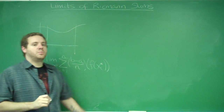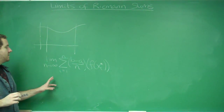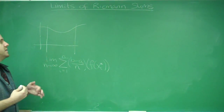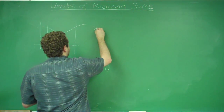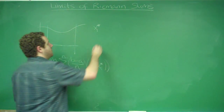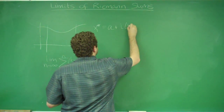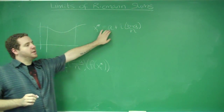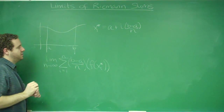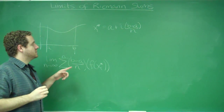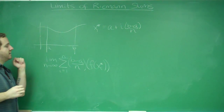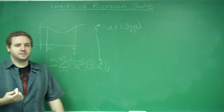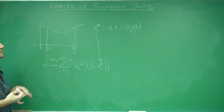xi star is the height at any given point in the rectangle. The last thing we need to do in terms of figuring out a specific problem is get an expression for f of xi star. You need to remember that xi star is always going to be represented as a plus i times b minus a over n. A is your starting value — this is from a to b. b minus a over n is the width of your rectangles. Multiply that times i and add it to a — that is your xi star that you evaluate at your f.